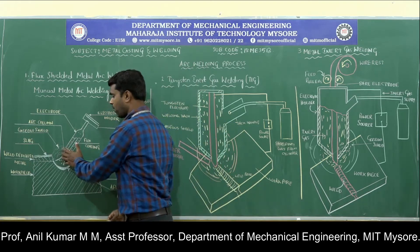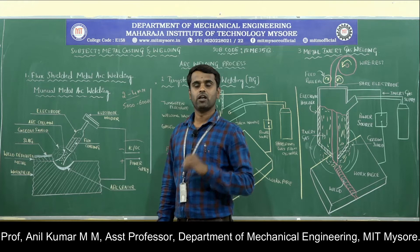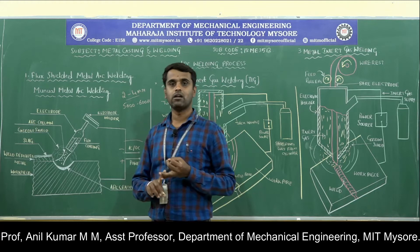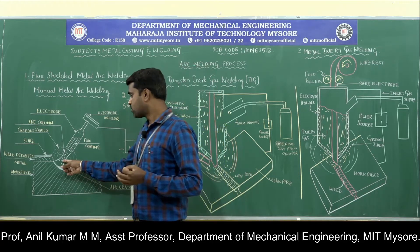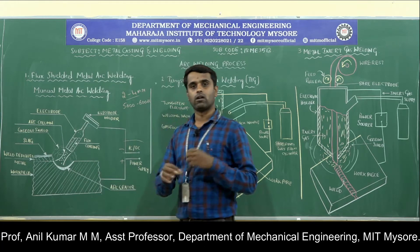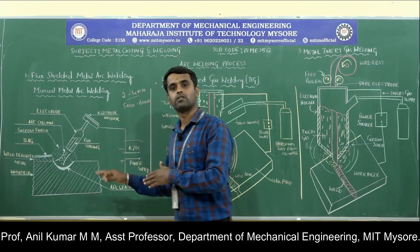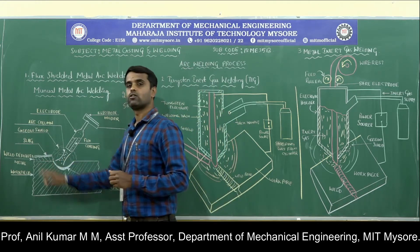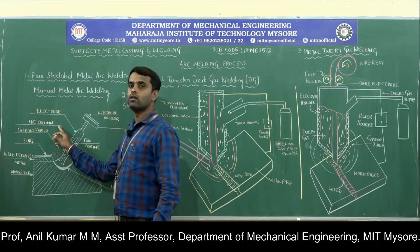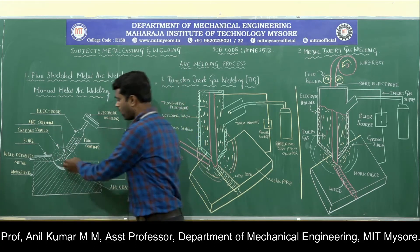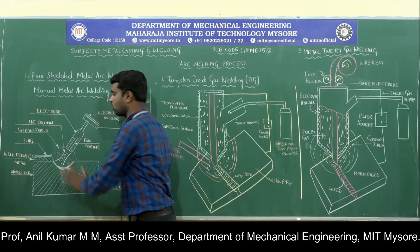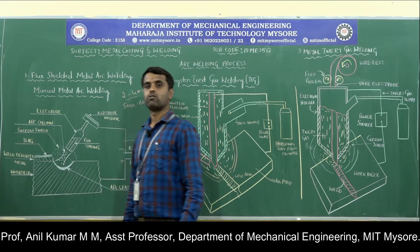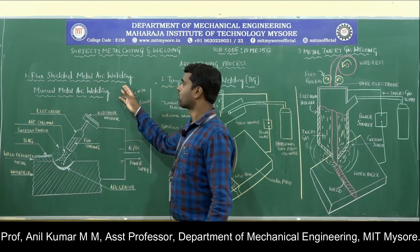The flux serves multiple functions: it prevents oxidation, removes oxides present in the molten metal, stabilizes the electric arc, and forms slag. The flux material reacts with impurities present in the molten metal and forms slag that floats on top of the molten metal, protecting it from the atmosphere. The flux material also forms a gaseous shield to protect the molten metal, producing a good quality joint. That is the working of flux shielded metal arc welding.